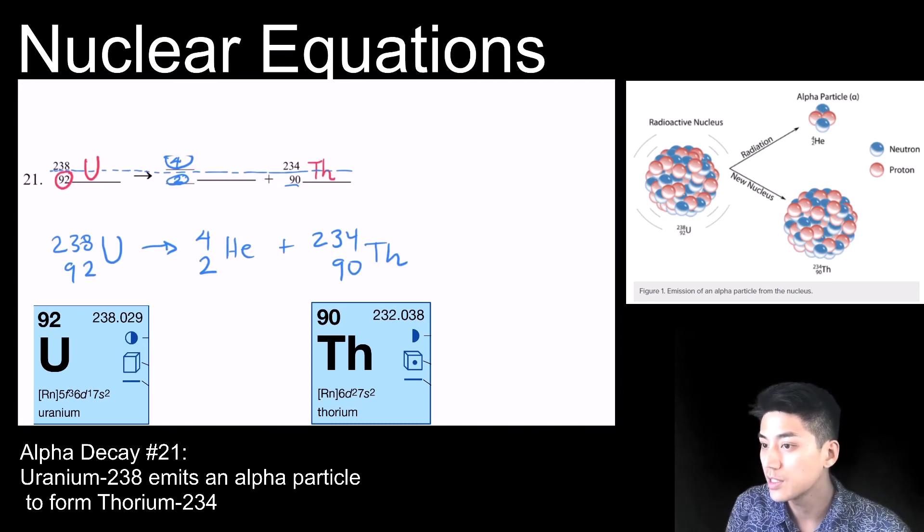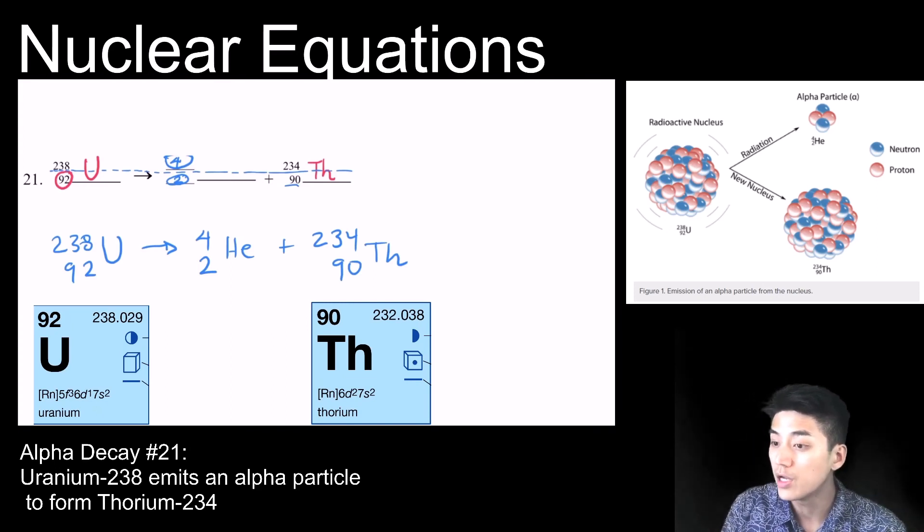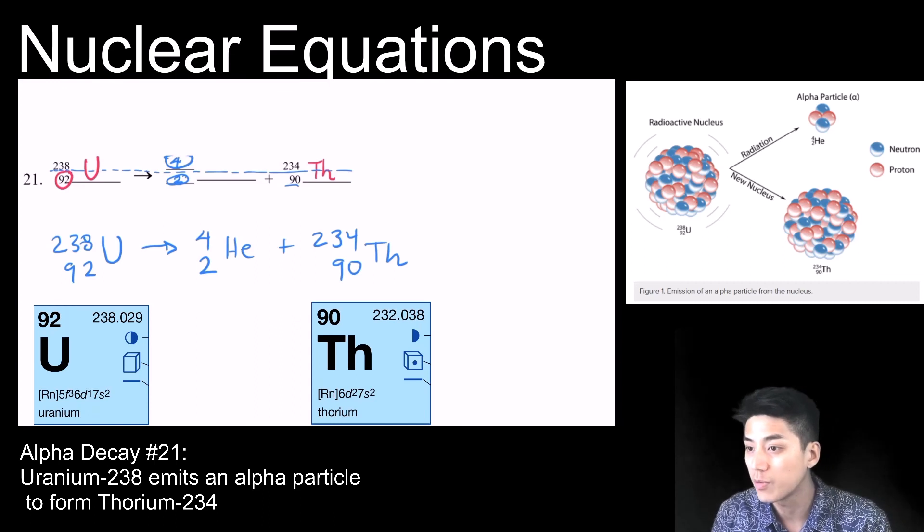And in the process, it leaves behind thorium 234, which is your new isotope. So typically, things that are unstable are radioactive. And when you're radioactive, you want to become a more stable form of yourself by shooting off radiation. So it could be beta particles, or in this case, it could be alpha particles.